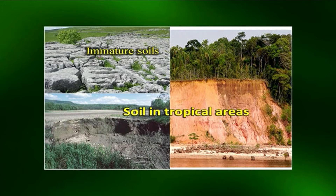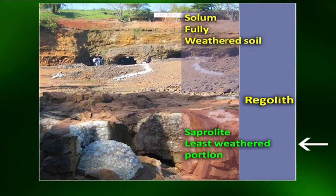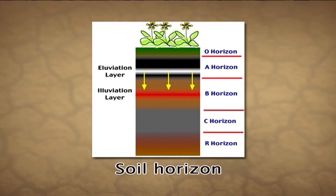In tropical areas the profile can be as deep as several meters, where the climate is conducive to rapid alteration of the underlying rocks to form soil. All the weathered material within a soil profile constitutes regolith. The upper horizons, which have the most weathered portion, is called the solum, while the least weathered portion of the regolith lying directly above the consolidated bedrock is called the saprolite. Each soil type has at least one, usually three or four horizons.